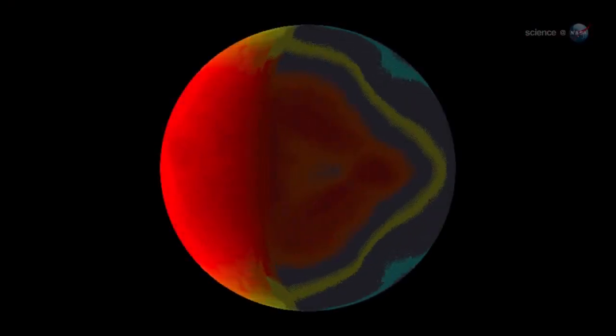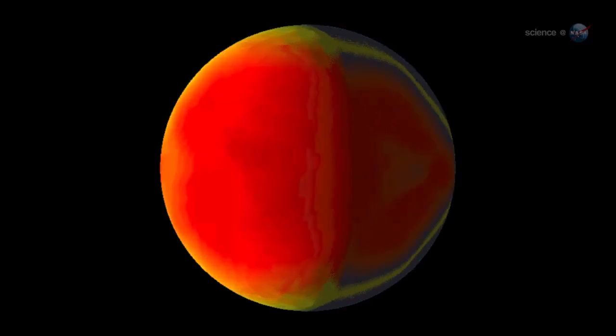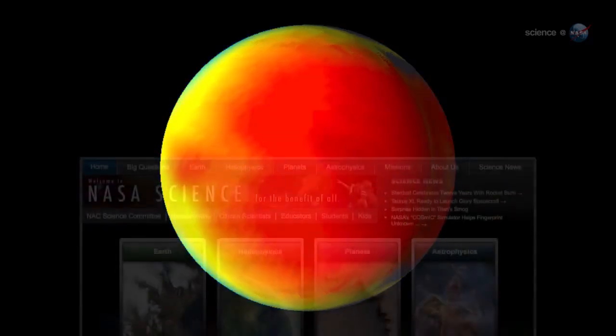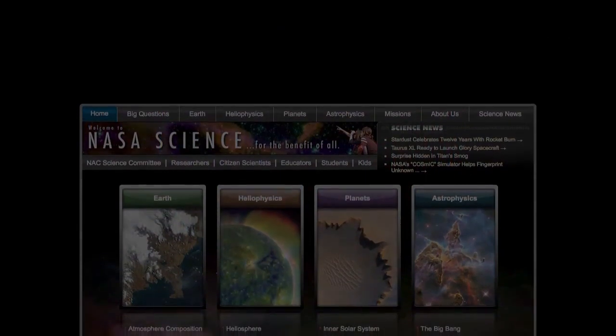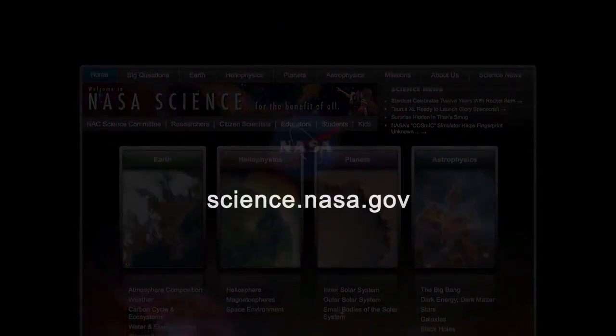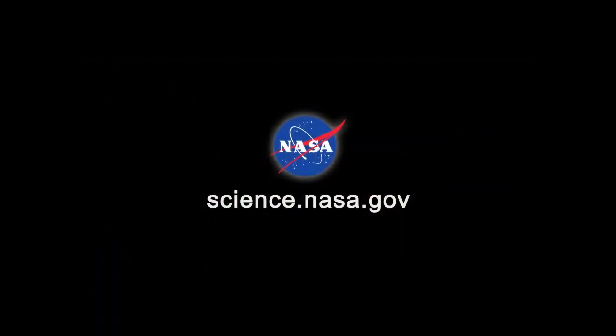For now, just one thing is certain. The meteorology of hot Jupiters is out of this world. For more news about weird weather in space, stay tuned to science.nasa.gov. Someone will leave.